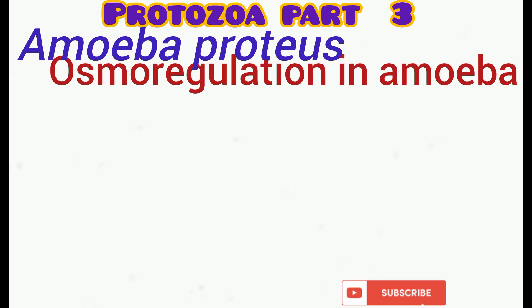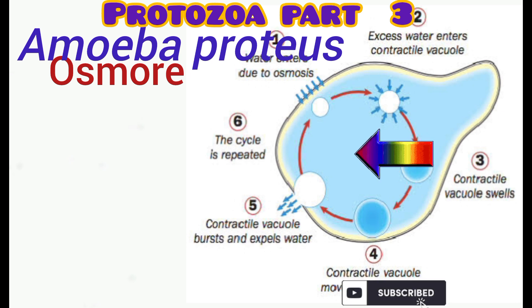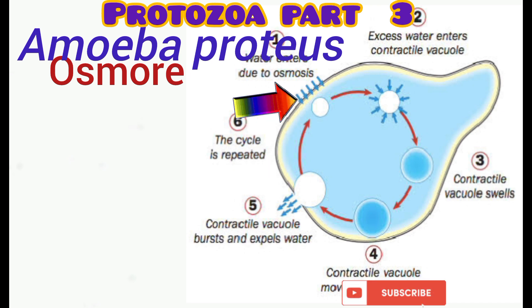How does Amoeba proteus carry out osmoregulation? Osmoregulation is the maintenance of the salt-water balance in the body of an organism — specifically the control of water content and salt concentration. Because amoeba live in a freshwater environment, osmotic concentration inside the body is higher than in the surrounding environment, so water moves into the body through osmosis.